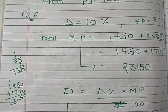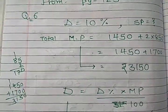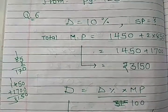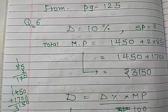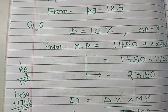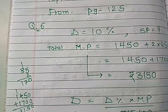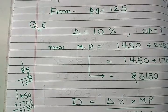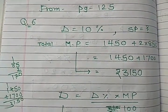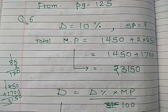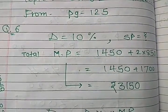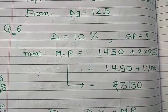What would the customer have to pay for a pair of jeans marked at 1,450 and 2 shirts marked at 850 each? So students, here is the solution of this question number 6. Discount percentage is given 10%, we have to find out SP. Total mark price is given.